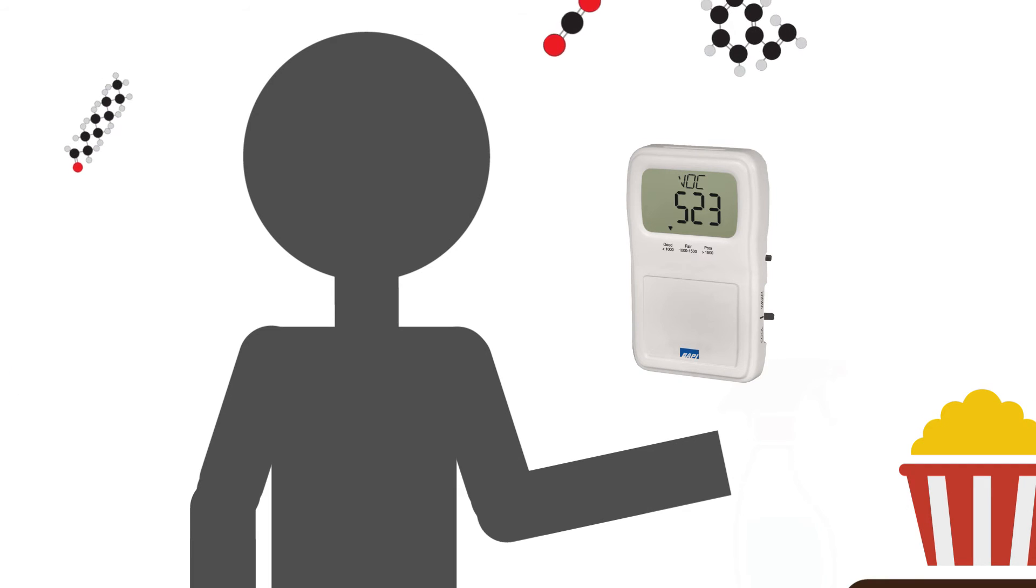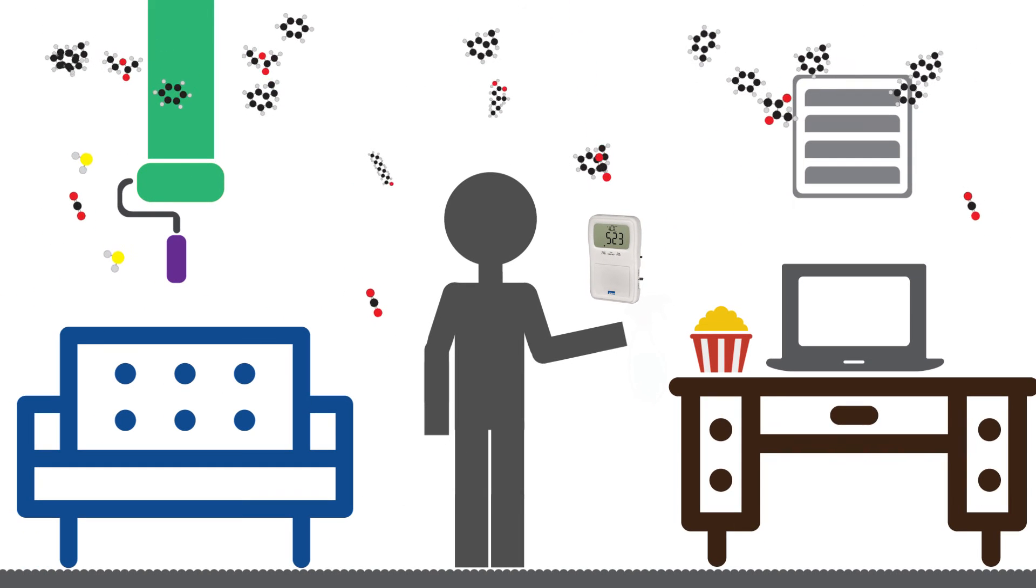A VOC sensor, on the other hand, detects all of the air contaminants, so the ventilation rate will reduce the VOCs to an appropriate level.